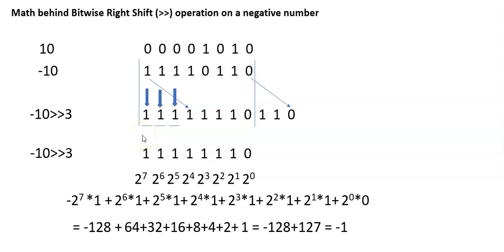In this video, we discuss the logic behind the bitwise right shift operation on a negative number. The problem we need to solve here is minus 10 right shift 3 positions.